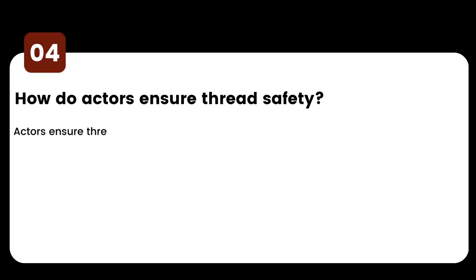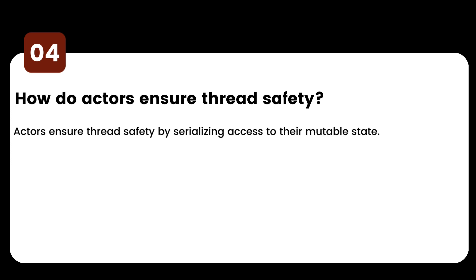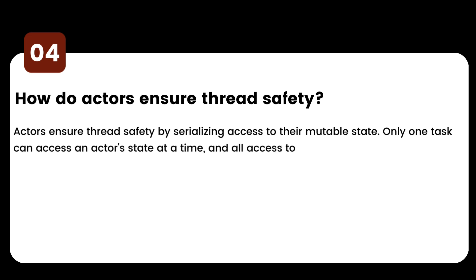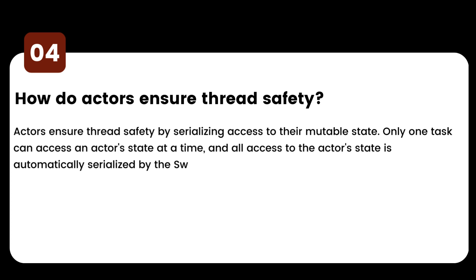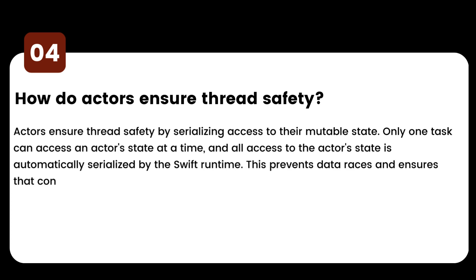How do actors ensure thread safety? Actors ensure thread safety by serializing access to their mutable state. Only one task can access an actor's state at a time, and all access is automatically serialized by the Swift runtime. This prevents data races and ensures that concurrent code behaves predictably.